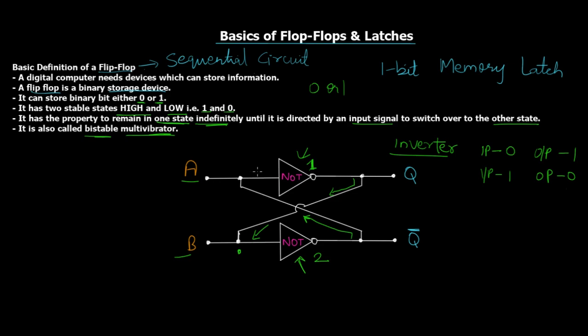Say for example right now the circuit does not have any power and we are powering it on for the first time. Let's say A initially is 0. So let me just write down A, B, Q and Q bar. We are assuming A is equal to 0.